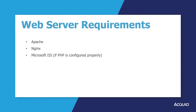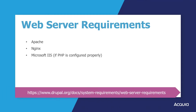Drupal will run on any web server with a version of PHP that meets Drupal's minimum PHP version. At the time of this recording, at least PHP 7.3 is required for Drupal core 9.1. Usually Nginx or Apache is chosen as the web server. Drupal core also works with Microsoft IIS if PHP is configured correctly. There are detailed technical specifications specific to each web server, which you will find directly on Drupal.org.